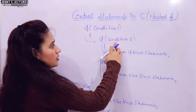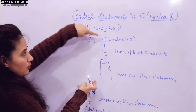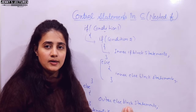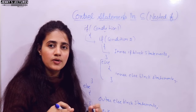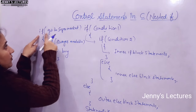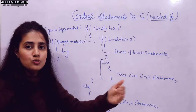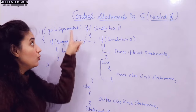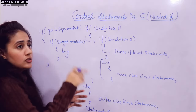This inner condition is only checked if the outer condition is true. If the outer condition is false, control skips the if block and goes directly to the outer else block. For example: if you go to the supermarket, then check if oranges are available — buy oranges. If you don't go to the supermarket, you can't even check whether oranges are available. You must go first; only then can you check.